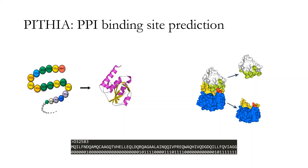Pythia is a protein-to-protein binding site prediction model that solely uses primary structure. It means that Pythia only uses the sequence of proteins to predict the amino acids that facilitate the interaction between the proteins. As an input, Pythia employs FASTA files which contain only the name and the sequence of the proteins, like what you can see here. As its output, Pythia predicts a number between 0 and 1: 0 means that this specific amino acid is not a binding site, and 1 indicates that this specific amino acid is a binding site.